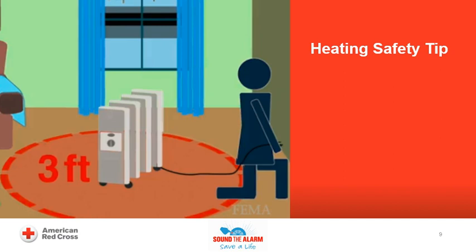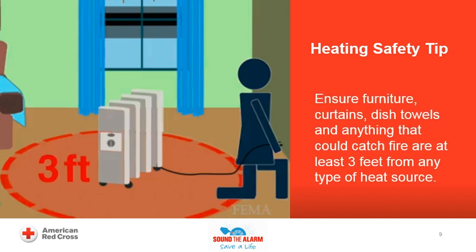Did you know that heating equipment being too close to things that can burn is another common cause of preventable home fires? Over half of home heating fire deaths are caused by heating equipment located too close to things that can burn, such as upholstered furniture, clothing, mattresses, or bedding. Keep furniture, curtains, dish towels, and anything that could catch fire at least 3 feet from any type of heat source, including portable space heaters, fireplaces, stoves, furnaces, and hot water heaters. An easy way to remember this rule: 3 feet from the heat.